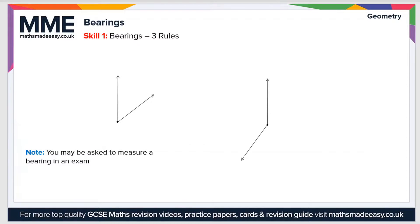Welcome to the Maths Made Easy tutorial on bearings. A bearing is a way of expressing the angle between two objects, or a way of expressing the location of an object geographically in relation to the north line.